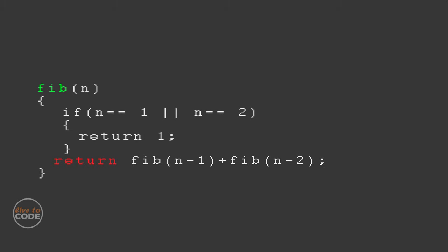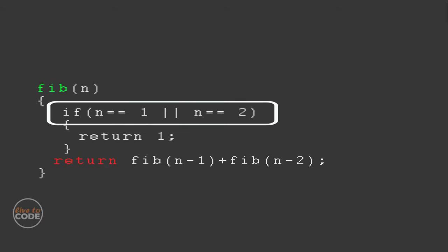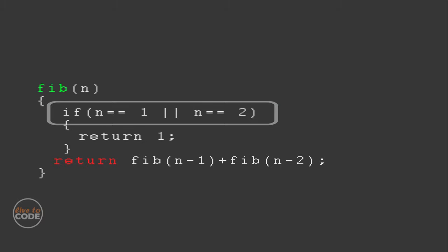Let's see the pseudocode for Fibonacci series for better understanding. This is the base condition: when the n value coming into the function is 1 or 2, then the fib function will return 1. This is the recursion call — recursion means a function will be called by itself. Here, the fib function is called by itself when the base condition fails.